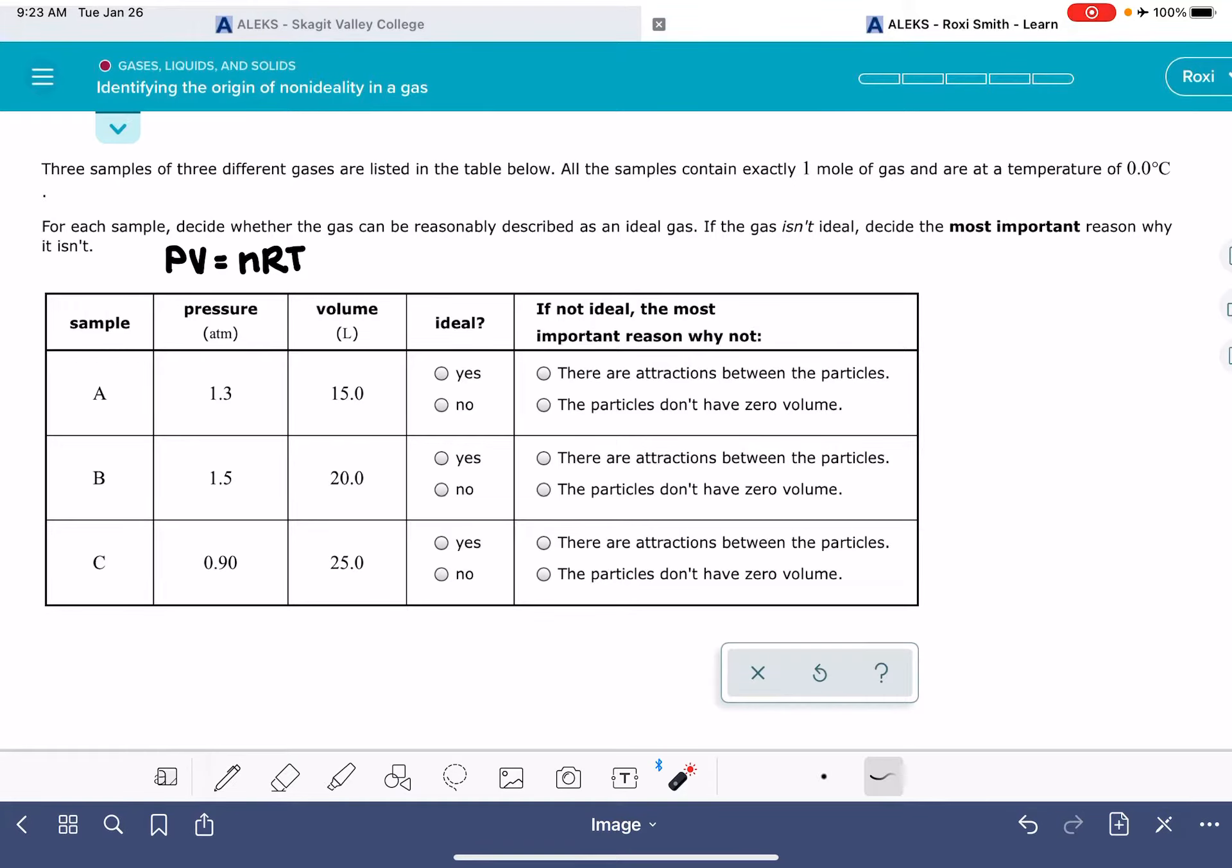So the data that's being given to us, the data that's changing, is the pressure and the volume. The nRT part is a constant for all three of these samples of gas, because n and t are exactly the same.